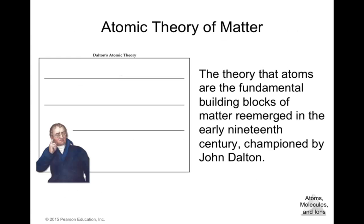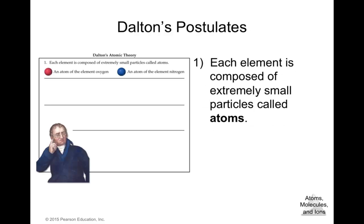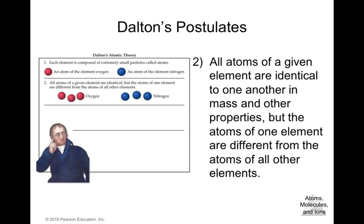Let's start with the atomic theory of matter, known as Dalton's atomic theory. The theory that atoms are the fundamental building blocks of matter emerged in the early 19th century by John Dalton. He stated that each element is composed of extremely small particles called atoms — the smallest particle you can find in matter with specific characteristics. All atoms of a given element are identical to one another in mass and other properties, but the atoms of one element are different from the atoms of all other elements.